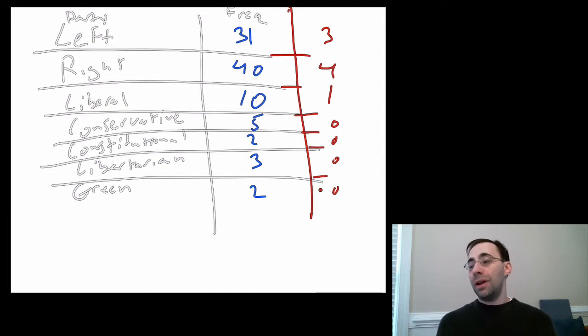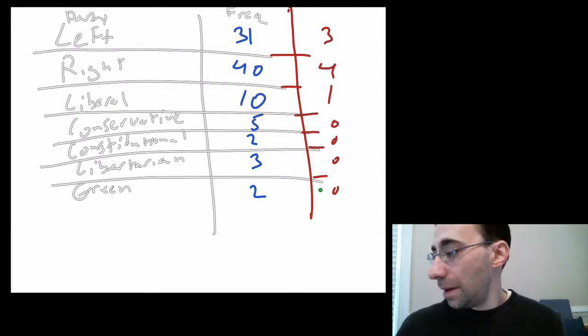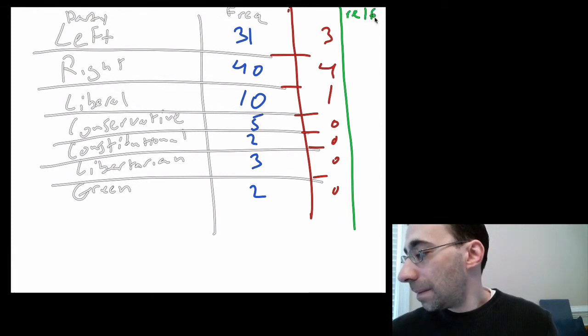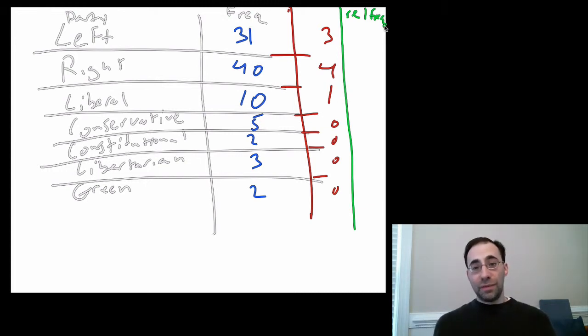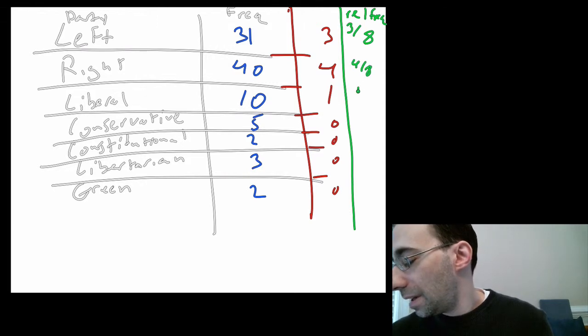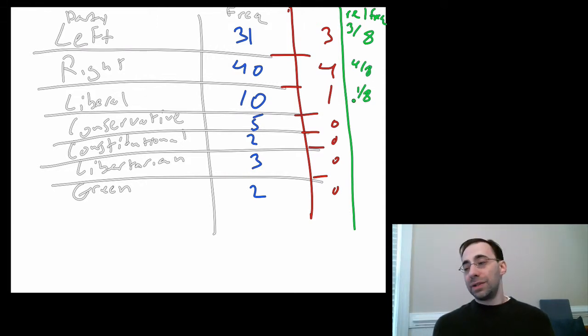Oftentimes, we don't want a raw frequency distribution, but what we want is a relative frequency distribution. We want to know exactly how often these things happen relative to what could have happened. We want something closer to a probability than just like a raw frequency number. So what we do is we take the total number of things, in this case, there's 3 plus 4 plus 1 is 8, and we divide the individual number of cases by the total number of cases to give us a relative frequency. So here we'd have 3 eighths and 4 eighths and 1 eighth. That would tell us the relative frequency of each category.